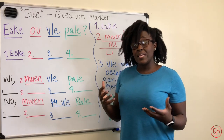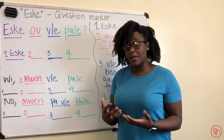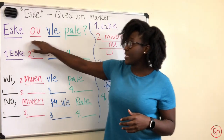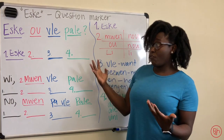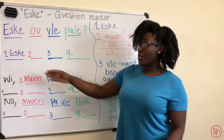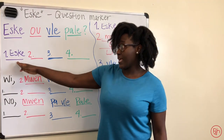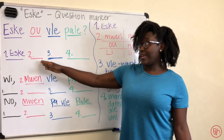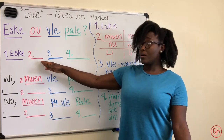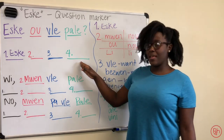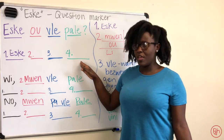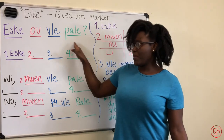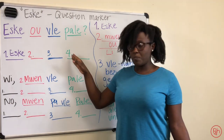So with that, we create a sentence with four parts. Start with est-ce que, then you could say ou, vle, parler. Est-ce que ou vle parler? Do you want to speak?